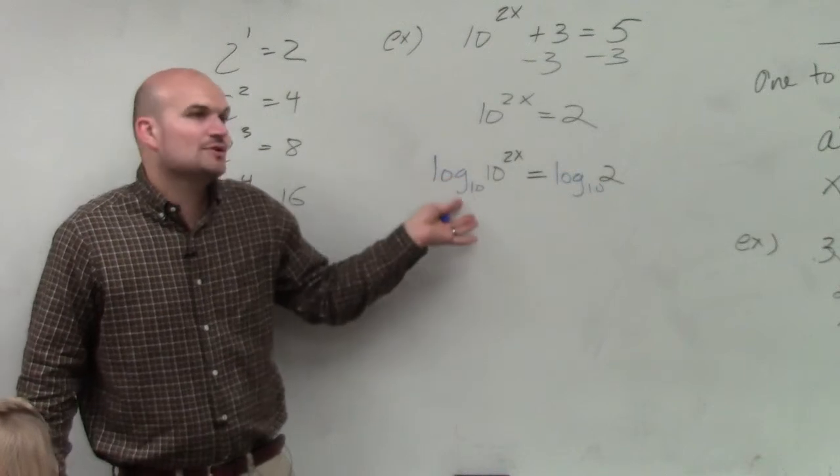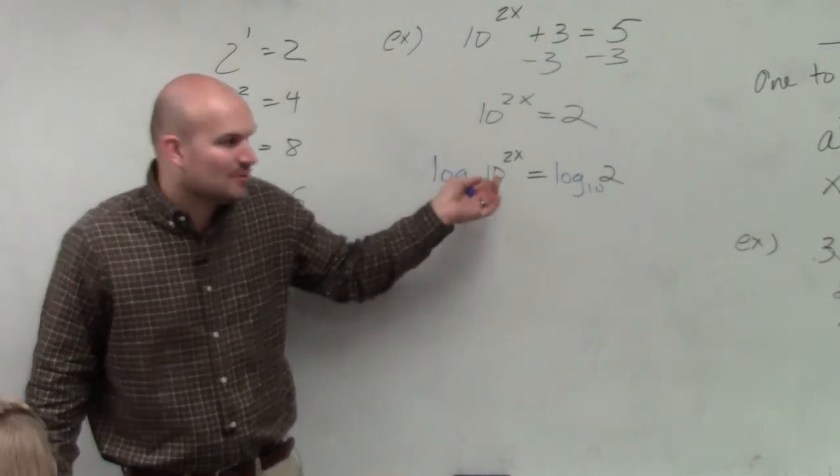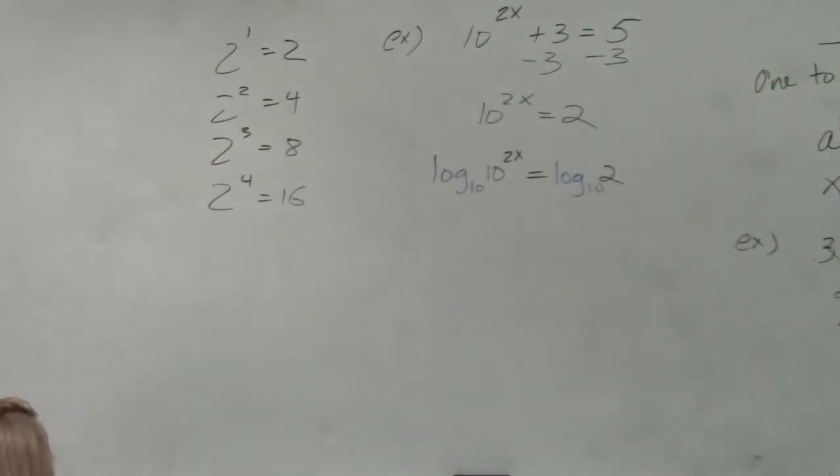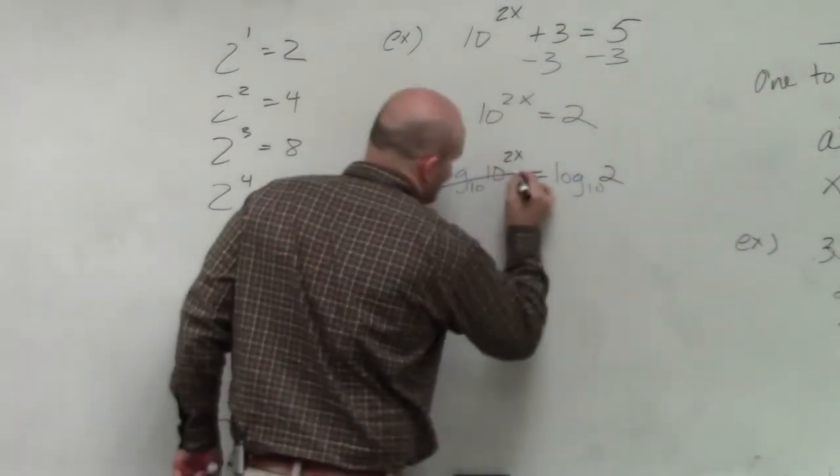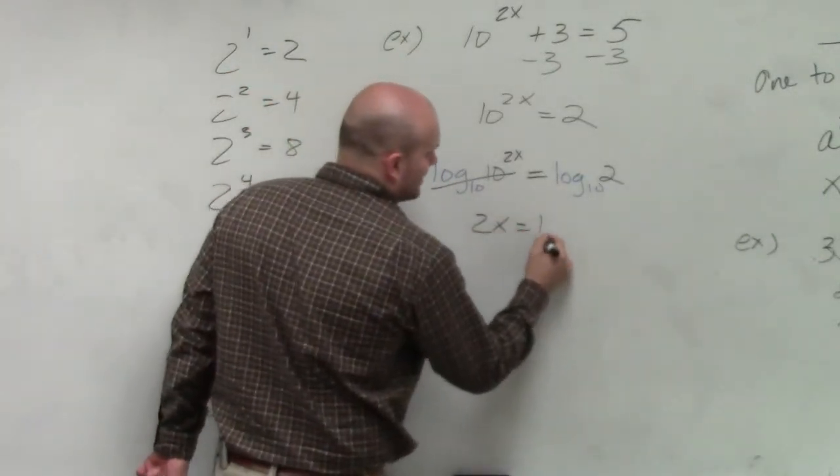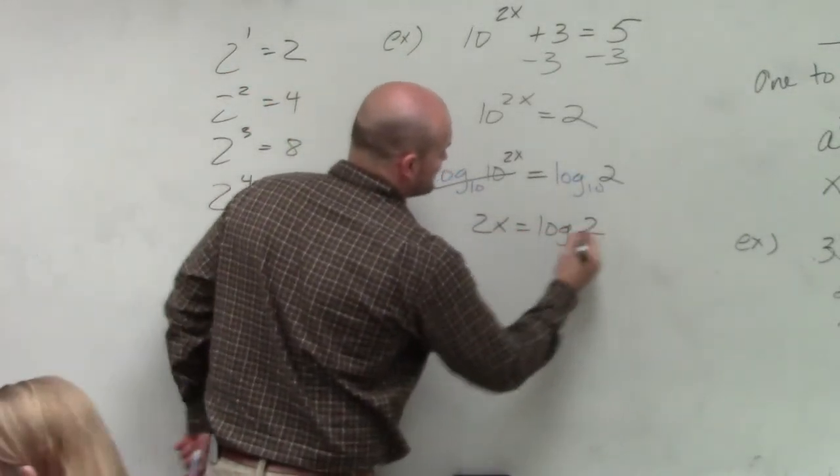Why would you want the base of your logarithm to be the same base as your exponent? Because when you have the logarithm of the same base of what you're taking the logarithm of, you're just equal to 2x equals log base 10 of 2.